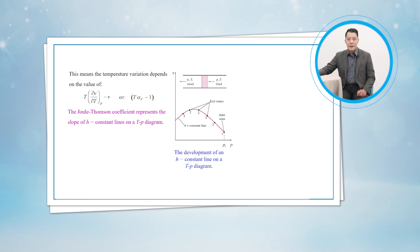is forced to flow through a porous plug, and its temperature and pressure downstream are measured. The experiment is repeated for different sizes of porous plugs, each giving a different set of T and P, plotting the temperatures against the pressures gives us a constant H line on a T-P diagram, as shown in the figure.